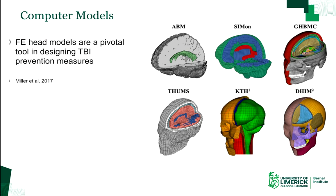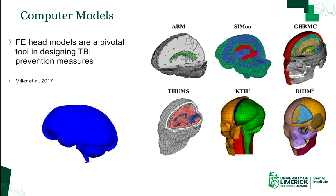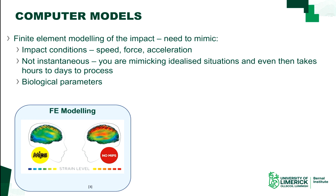We use FE models to understand the knock-on effect of concussion within the brain, and we have plenty of geometrically accurate models. However, it is the material properties within that limit the accuracy of these stress and strain models.